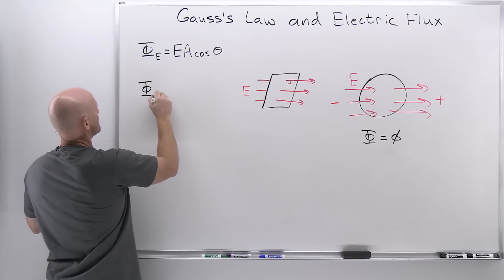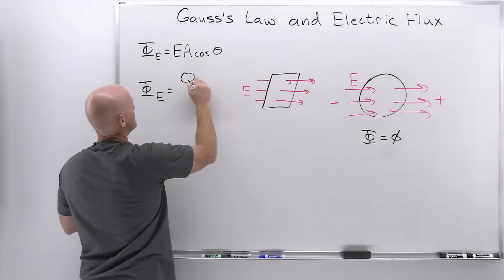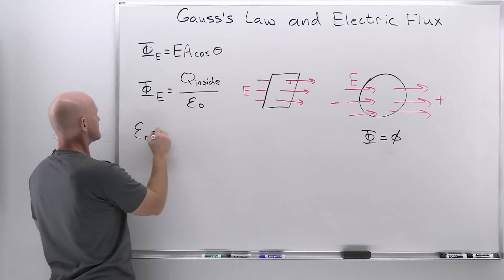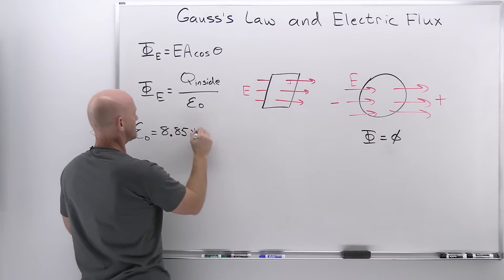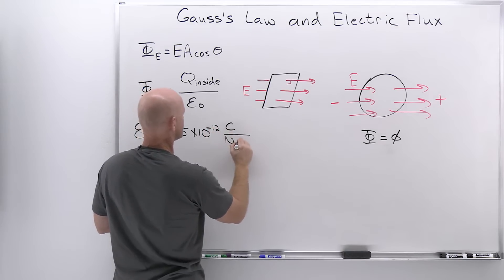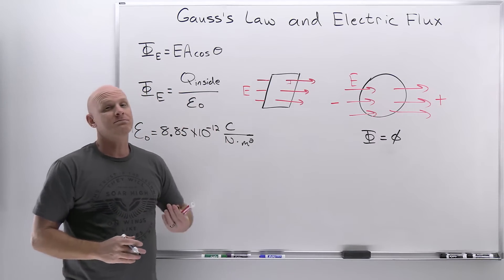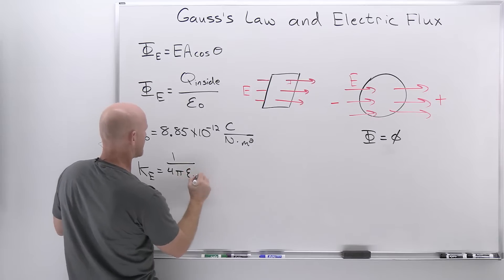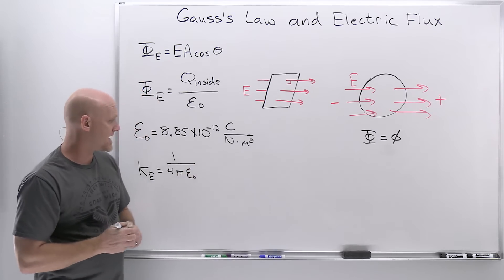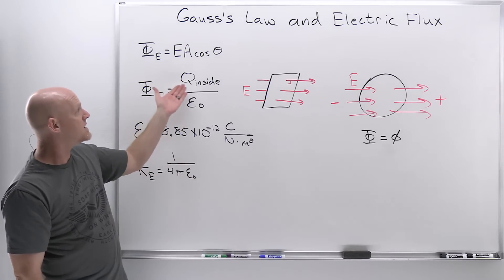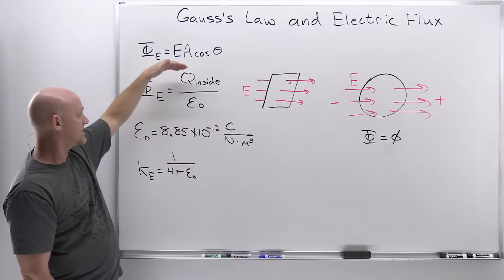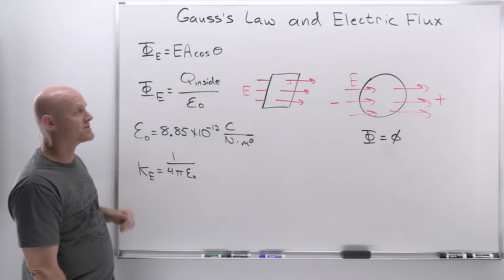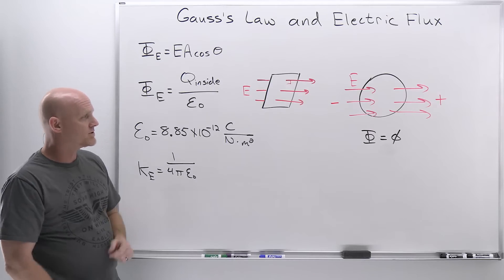Looking at Gauss's Law, the most common expression for electric flux through an enclosed surface is Q-inside divided by epsilon naught, where epsilon naught is the permittivity of free space — another constant equal to 8.85 × 10⁻¹² C²/(N·m²). It turns out Coulomb's constant K equals 1/(4π·ε₀), so the two constants are related. Sometimes Gauss's Law is written as Q-inside times 4πK instead, but Q/ε₀ is the most common form.